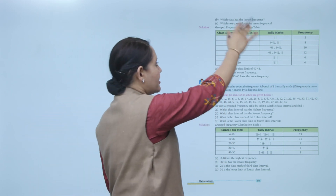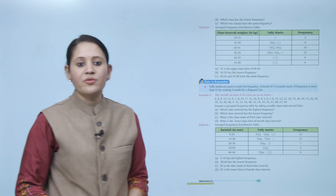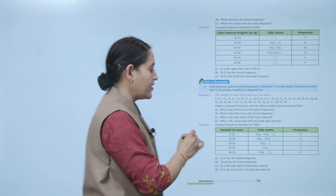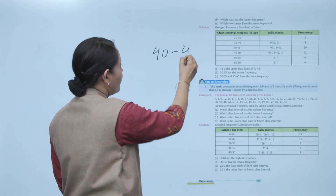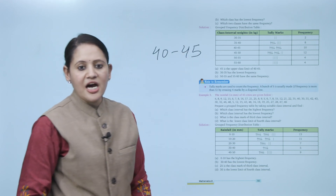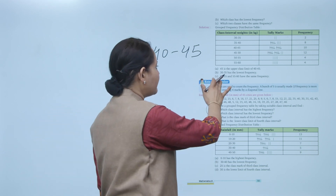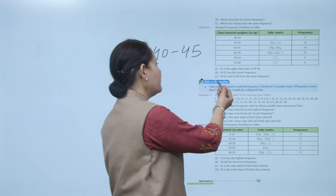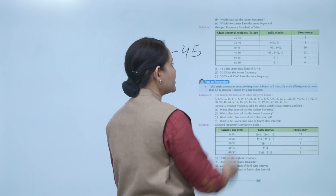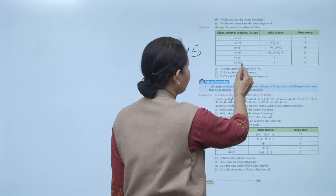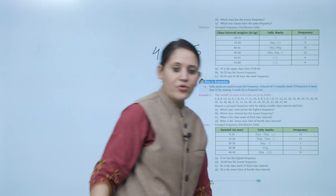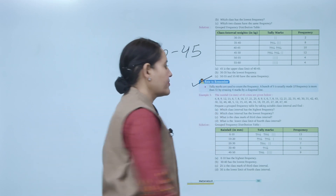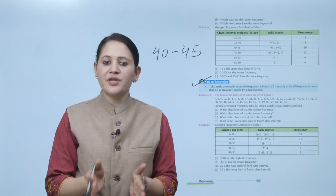For the first question: the upper class limit of 40–45 is 45, and 40 is the lower class limit. The class interval 30–35 has the lowest frequency — only 2. The class intervals 50–55 and 55–60 have the same frequency — both are 4.